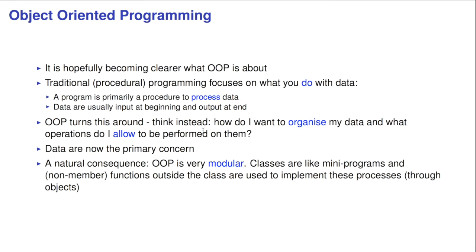Object-oriented programming turns this around to an extent. You need to think about how you want to organize the data, and what operations do I allow to be performed on them. So data are really the primary concern. It has a natural consequence that object-oriented programming is very modular. Classes are something like a mini-program, and we use non-member functions outside the class to glue all of this together and implement the processes through the objects which we want our code to do.